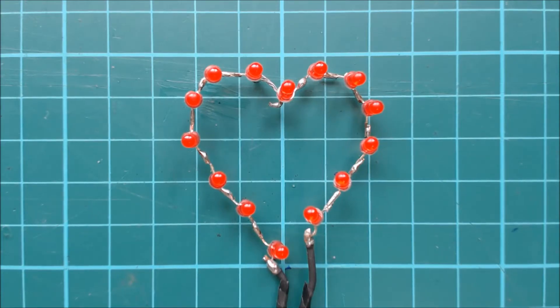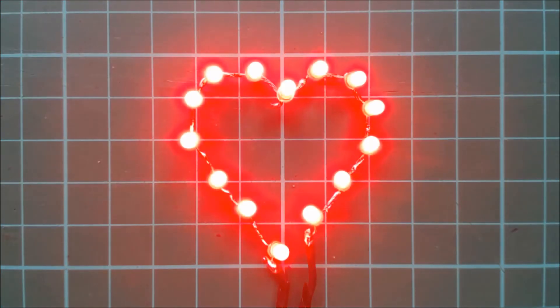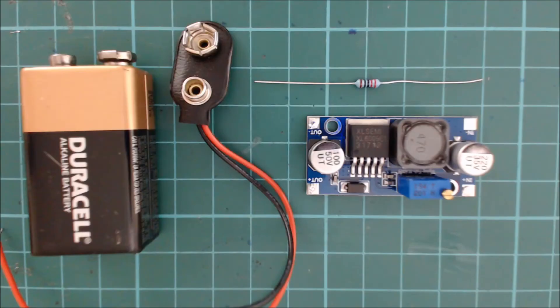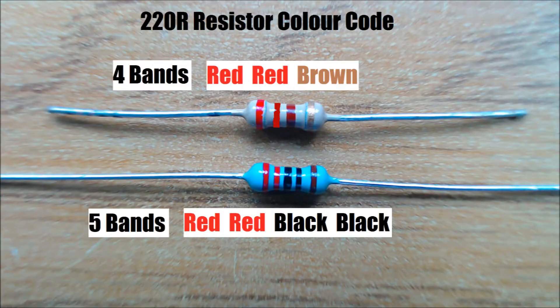The final part of this project is how to power the lamp. The heart has 14 2 volt LEDs, so we need a 28 volt power supply. The parts we need are a 9 volt battery, a 9 volt battery connector, a 220 ohm resistor, and an adjustable step up boost module. The resistor is easily available on Amazon, eBay, or from any electronic component supplier.